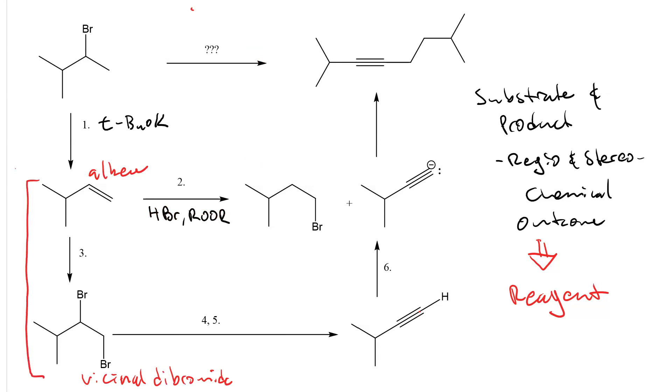In step three, our substrate is an alkene and our product is a vicinal dibromide. This means our process is halogenation and our reagent is bromine in carbon tetrachloride.